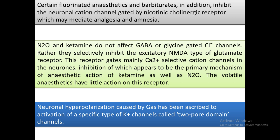Certain fluorinated anesthetics and barbiturates additionally inhibit neuronal cation channels gated by nicotinic cholinergic receptors, which may mediate analgesia and amnesia. Nitrous oxide and ketamine do not affect GABA or glycine-gated chloride channels; rather, they selectively inhibit the excitatory NMDA type of glutamate receptor. Glutamate binds to the NMDA receptor causing calcium entry and excitation.